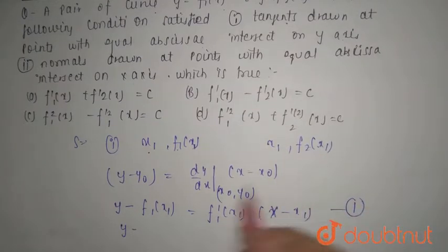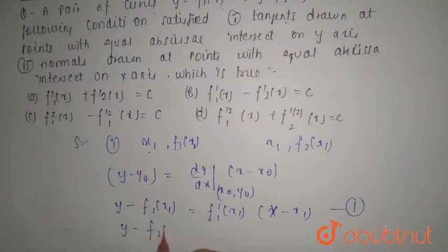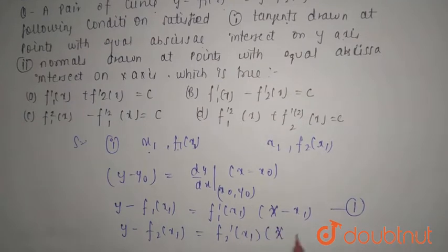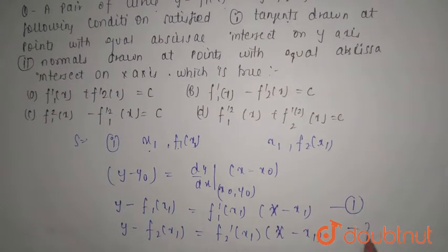Now for second point, you have y minus f2(x1) equals f2'(x1) times x minus x1. This is your second equation.